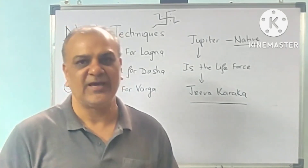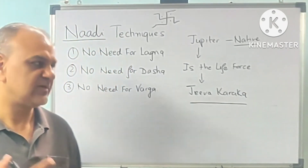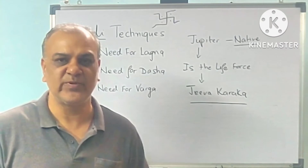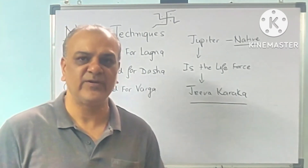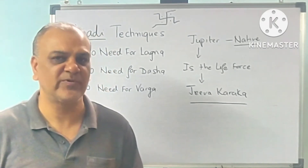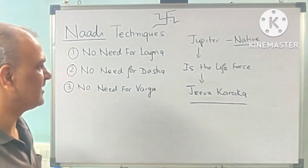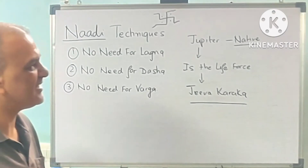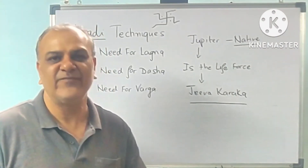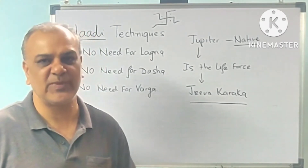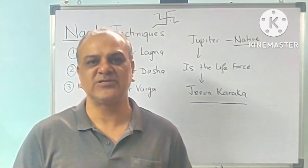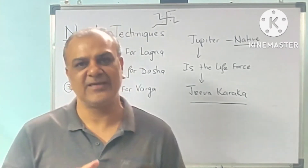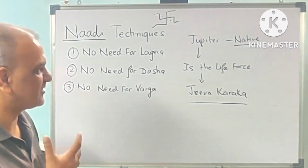A lot of techniques and predictions come out of Jupiter's progression. In coming classes we will definitely learn about Jupiter progression, Saturn progression, Rahu progression, and Moon progression. In Nadi we don't use transits — we only use progression, which I will explain in upcoming classes. For now, write down: Jupiter is the native significator, he is the life force and jiva karka. For every chart we need Jupiter's placement — which sign, which house, and what degrees Jupiter holds in the natal chart.